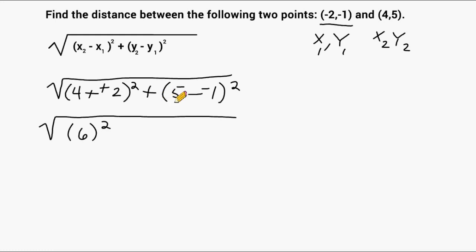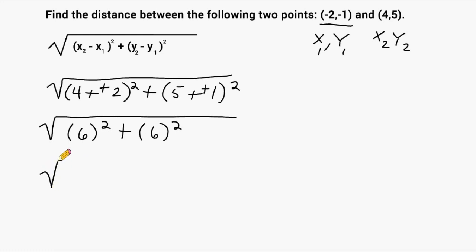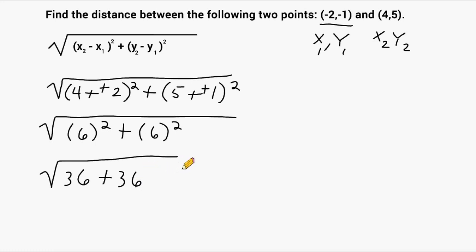And in the second set of parentheses we have 5 minus negative 1, which changes to 5 plus 1, which is 6. So we bring down our addition sign and we have to square 6 as well. Simplifying further: 6 squared is 36, plus 6 squared again, which is 36.